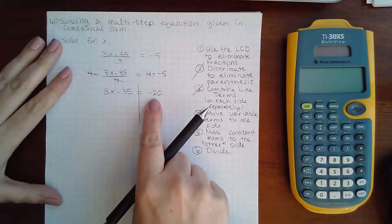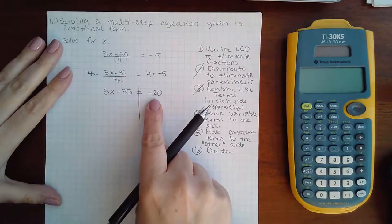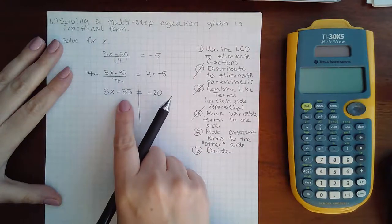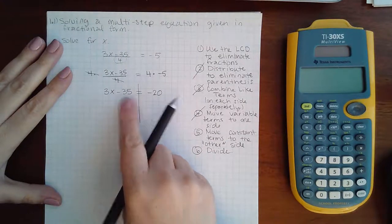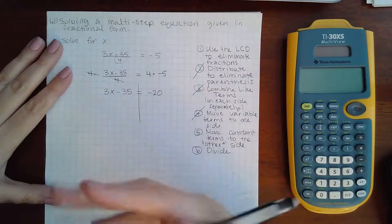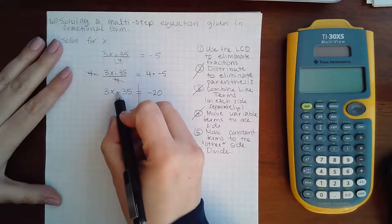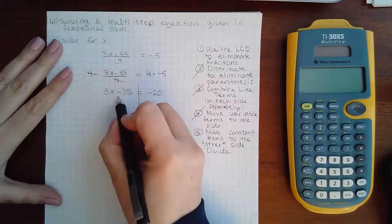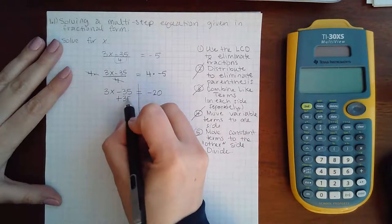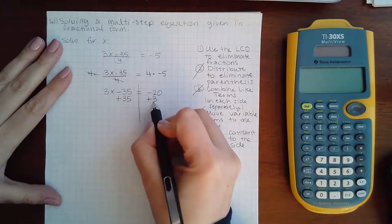This constant is already on the right side. So I need to move the negative or minus 35 to the right side. How do you move a constant? You use the opposite sign. So if this is subtracting 35, then I'm going to add 35 to undo that operation.